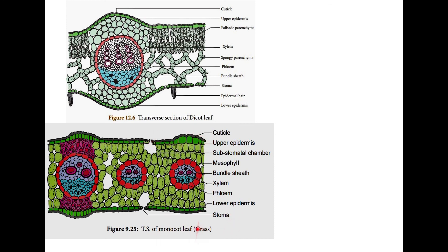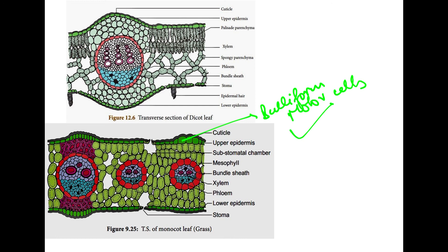An important feature unique to monocot leaf is the rolling of leaf, due to some larger cells present in the upper epidermis. These cells are known as bulliform or motor cells. These cells are absent in dicot leaf but are present in monocot leaf. These are the basic differences you need to remember when asked about the anatomy of dicot and monocot leaf.